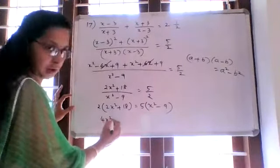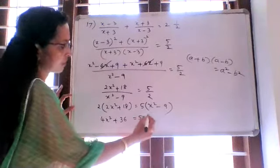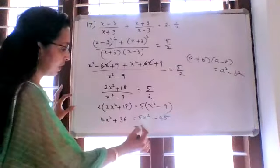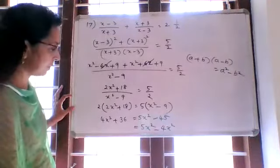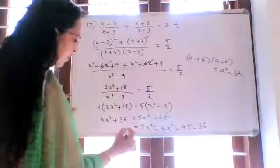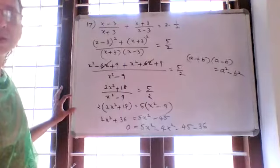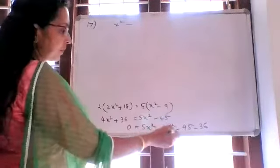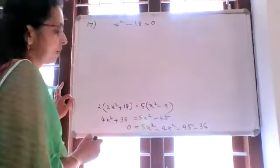We have 4x squared plus 36 equals 5x squared minus 45. Moving 4x squared to the right: 5x squared minus 4x squared gives x squared. Then minus 45 minus 36 remaining gives x squared minus 81 equal to 0, so x squared equals 81.